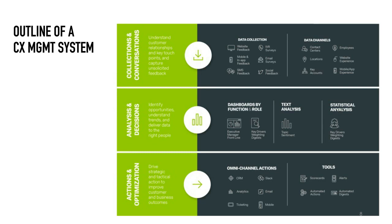With that in mind, I'd like to give an overview of what a CX Management System typically includes from a technology perspective — the components and how they all fit together. A CX Management System first enables organizations to understand customer relationships and key touchpoints and capture unsolicited feedback. Think through all the different data collection channels — online, mobile, and all the different points at which customers interact with you — as opportunities to capture feedback and understand the experience.